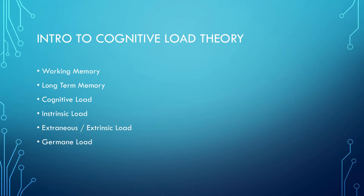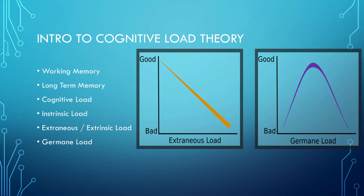The more nuanced of the three subcategories is germane load. It has some varying definitions across the literature, but the one I've adopted is that it's additional mental effort used to facilitate learning, but not intrinsic to the information itself. For extraneous load, more is usually worse, but for germane load it's more of a parabola — there's some optimal amount where too little means the learner is just passively sitting there absorbing information, and too much means so much extra work to take in information that you end up not remembering what you were supposed to learn.